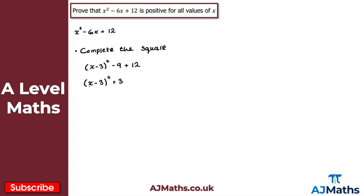Now in completed square form we can recognize key facts. The term (x − 3)² will always be greater than or equal to zero — no matter what value of x we substitute, squaring the result always gives a non-negative value. For example, x = 1 gives (−2)² = 4; x = 3 gives 0² = 0. So (x − 3)² ≥ 0.